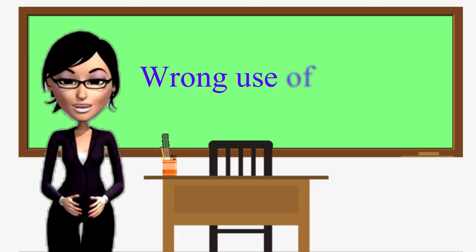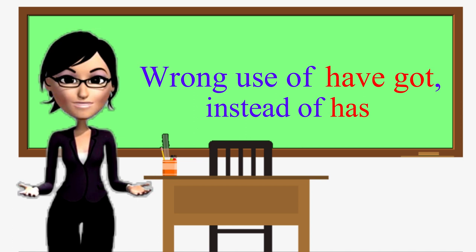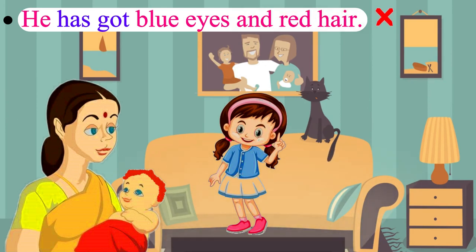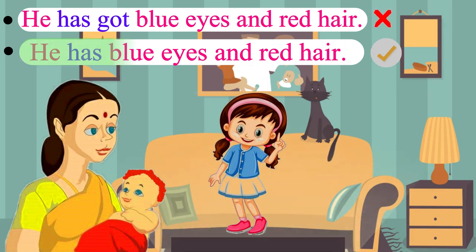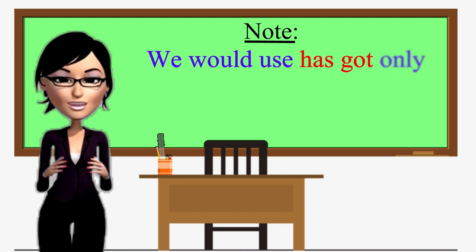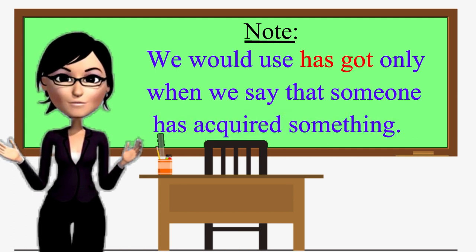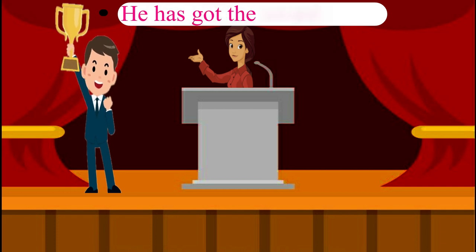Wrong use of 'have got' instead of 'has.' It is not correct to say 'He has got blue eyes and red hair.' Please repeat the correct sentence: He has blue eyes and red hair. We would use 'has got' only when we say that someone has acquired something, like: He has got the award at last.